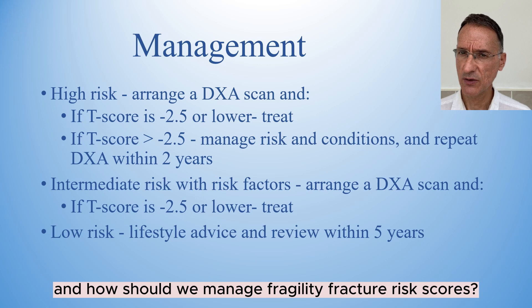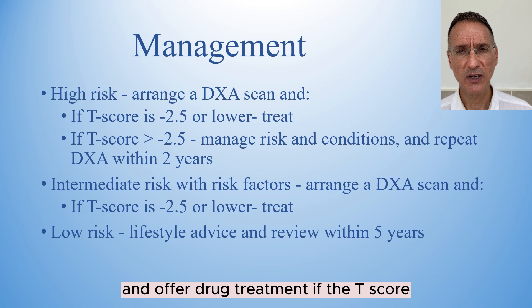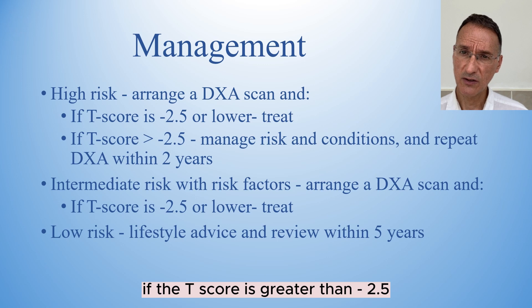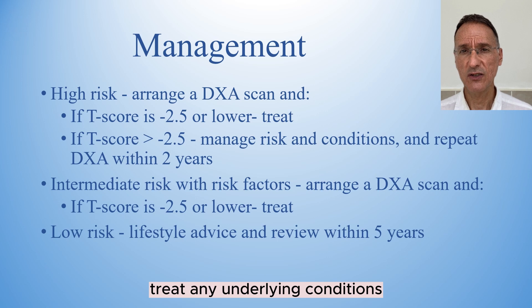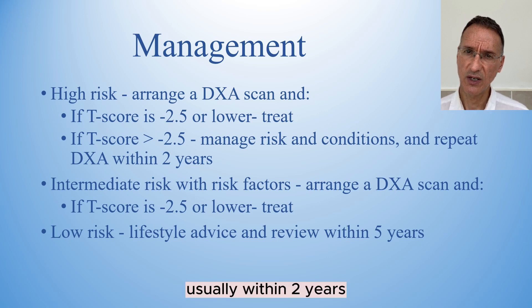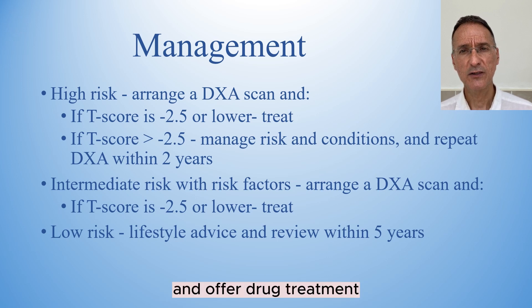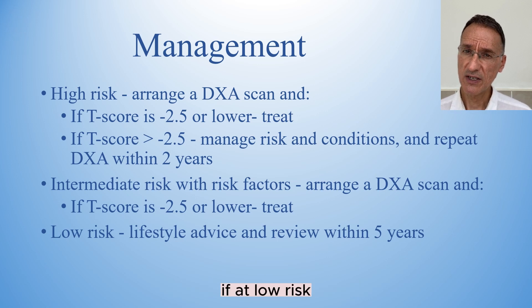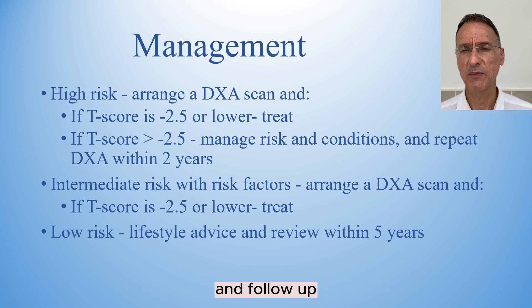How should we manage fragility fracture risk scores? If at high risk, we will arrange a DEXA scan and offer drug treatment if the T-score is minus 2.5 or lower. If the T-score is greater than minus 2.5, we will modify risk factors, treat any underlying conditions, and repeat the DEXA scan usually within 2 years. If at intermediate risk with risk factors, we will arrange a DEXA scan and offer drug treatment if the T-score is minus 2.5 or lower. If at low risk, we will not arrange a DEXA scan, but will offer lifestyle advice and follow-up within 5 years.